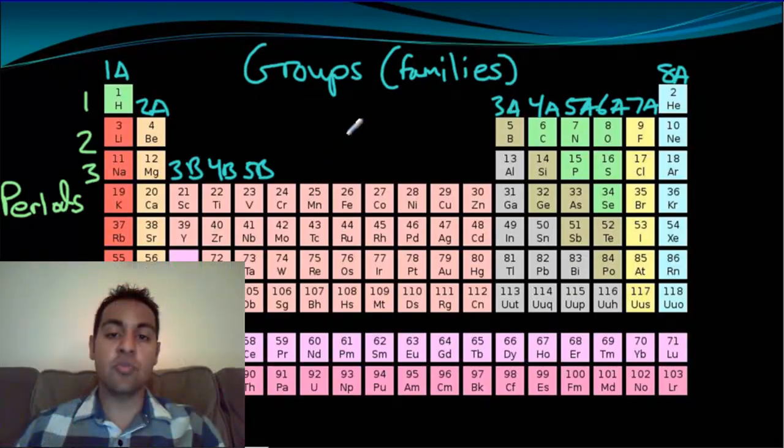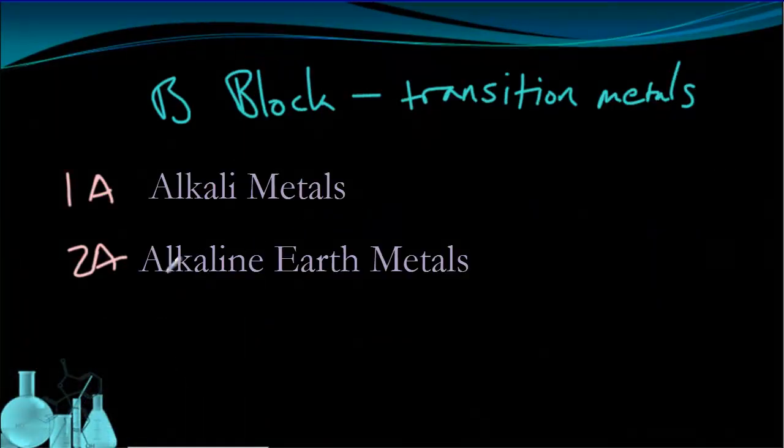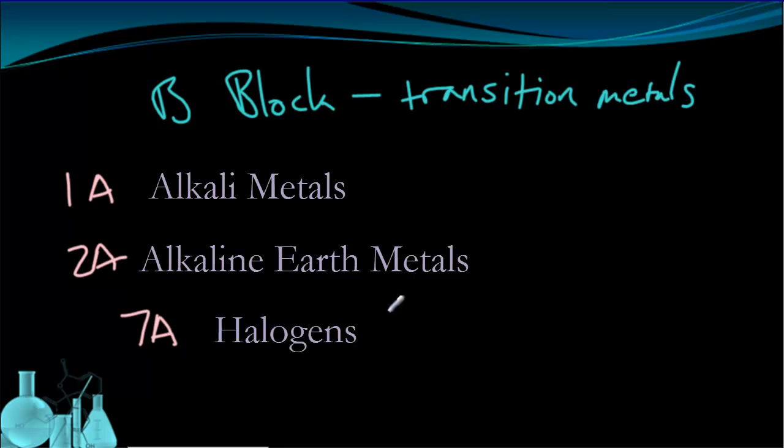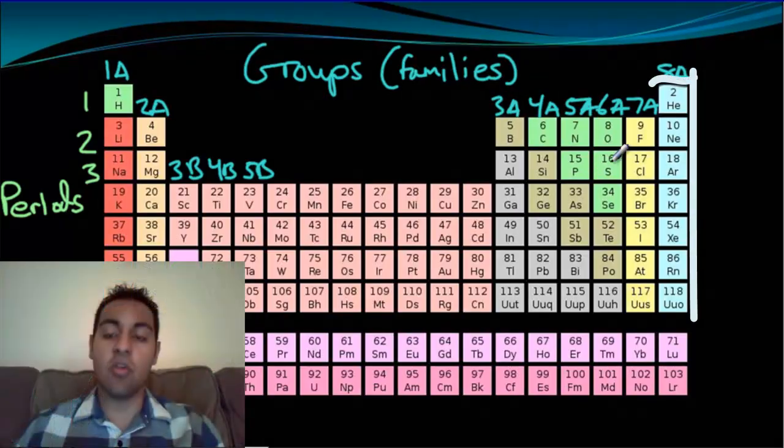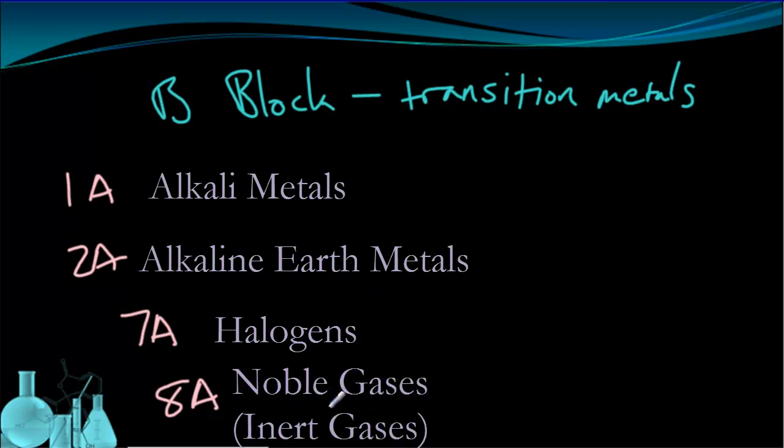The other two notable groups are on the other side of the table, 7A and 8A. 7A is right here, and these are called halogens. So 7A are called halogens. 8A, the last group all the way on the right side, are called noble gases or inert gases. We call them that because they don't react with any other elements. They're inert, they don't react.